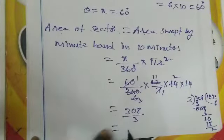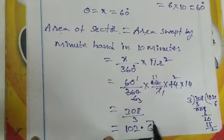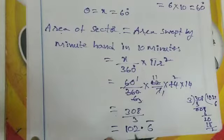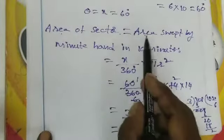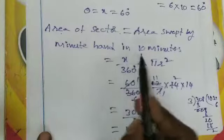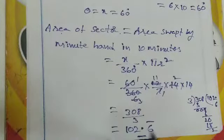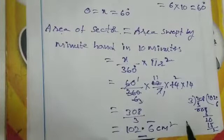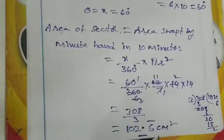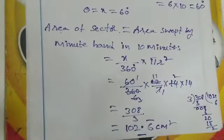The answer is 102.6̄ cm². So the area swept by the minute hand in 10 minutes is 102.6 repeating centimeters squared. Thank you, please share and like this channel.